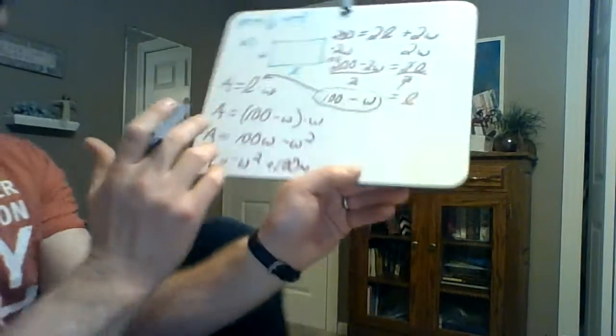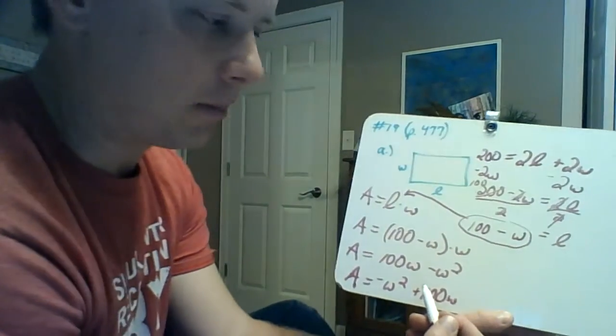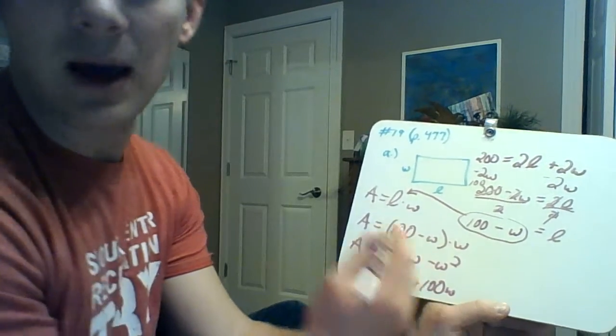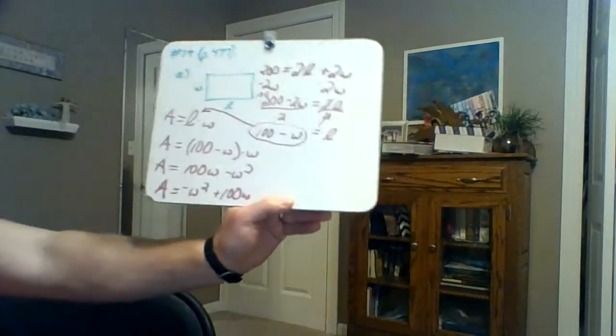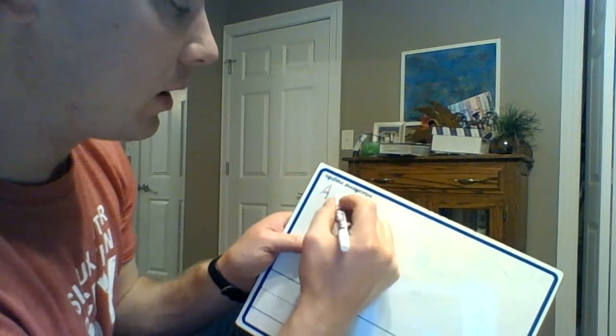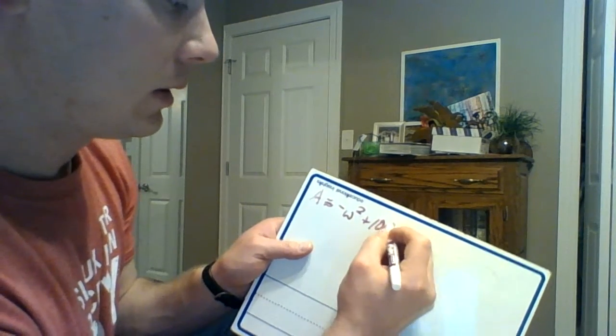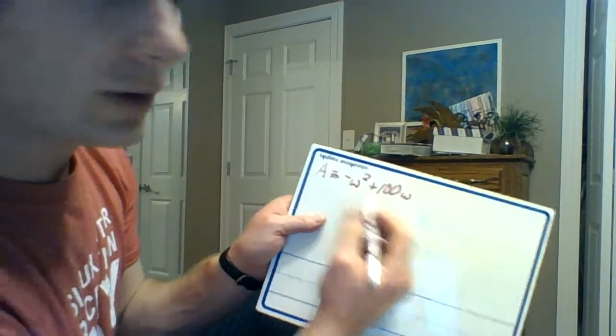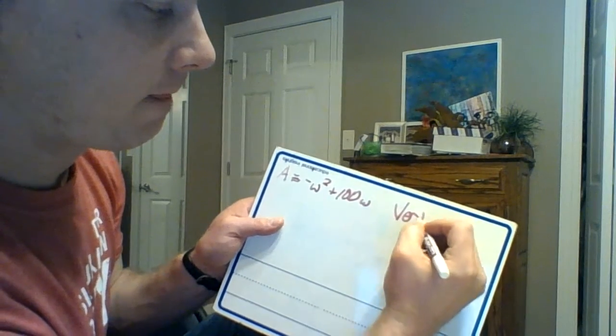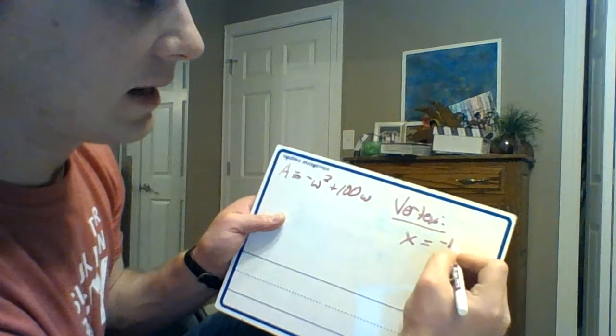The easiest way for you guys to do that would be to graph it in Desmos and find that point right now, but let me just show you a quick way to do that by hand. You can find the vertex of a parabola, at least the x value, by doing negative b over 2a.